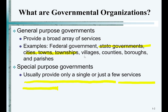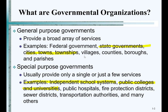We have state and local governments. In this class, we will only talk about state and local government accounting — we will not talk about accounting for the federal government. If I was teaching this class in Washington, D.C., I probably would focus some time on federal government accounting. State and local means the 50 states and the hundreds of thousands of counties, cities, townships, etc.